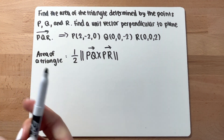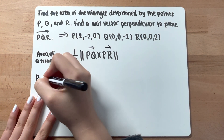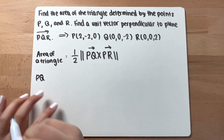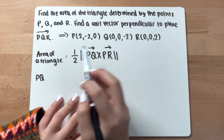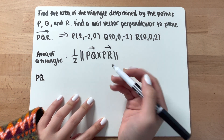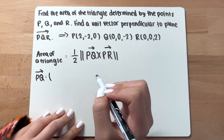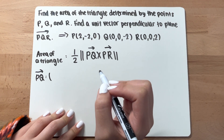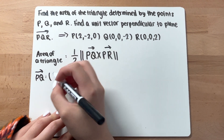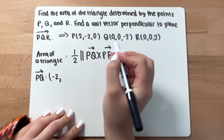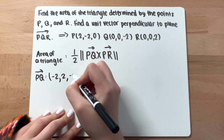Begin by finding the vectors. You want to find vector PQ and vector PR. Starting with vector PQ: terminal minus initial gives (0 minus 2) = negative 2, (0 minus negative 2) = positive 2, and (negative 2 minus 0) = negative 2. So PQ = (-2, 2, -2).